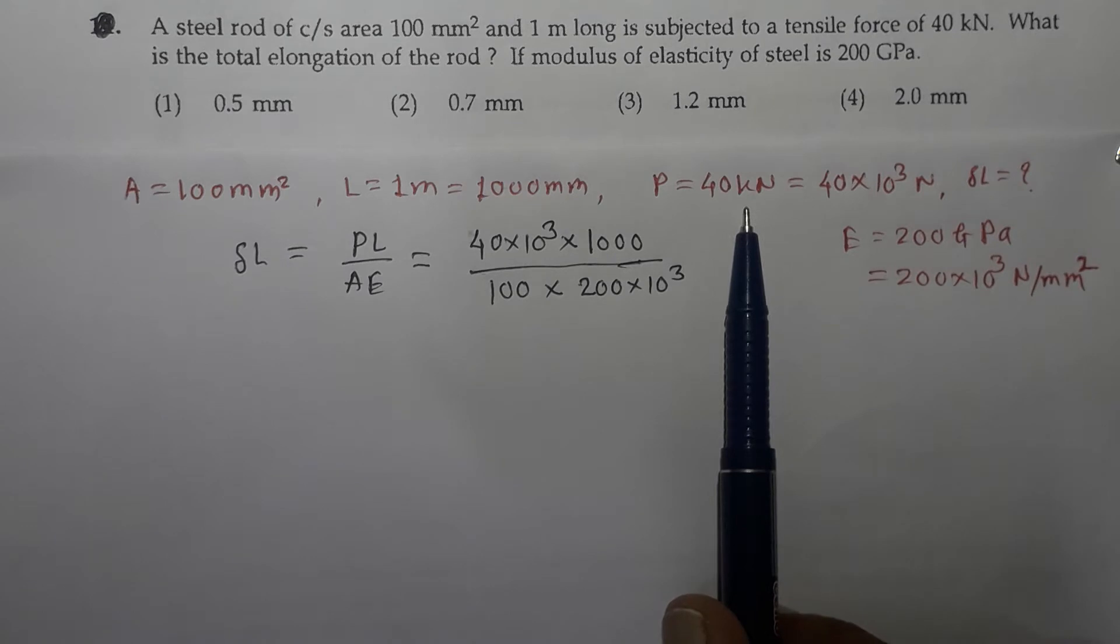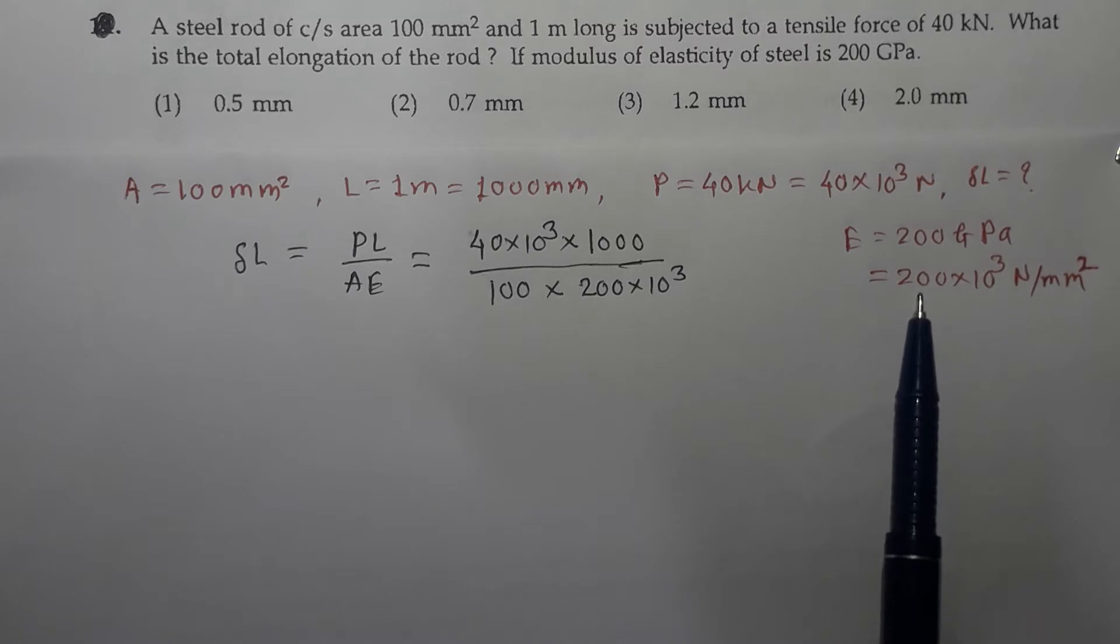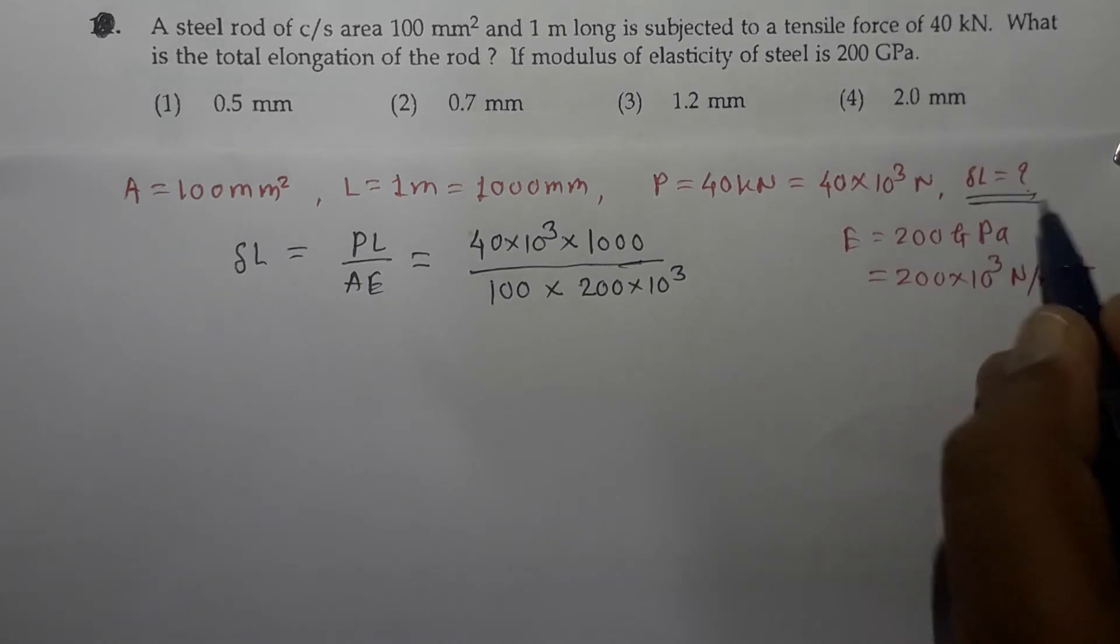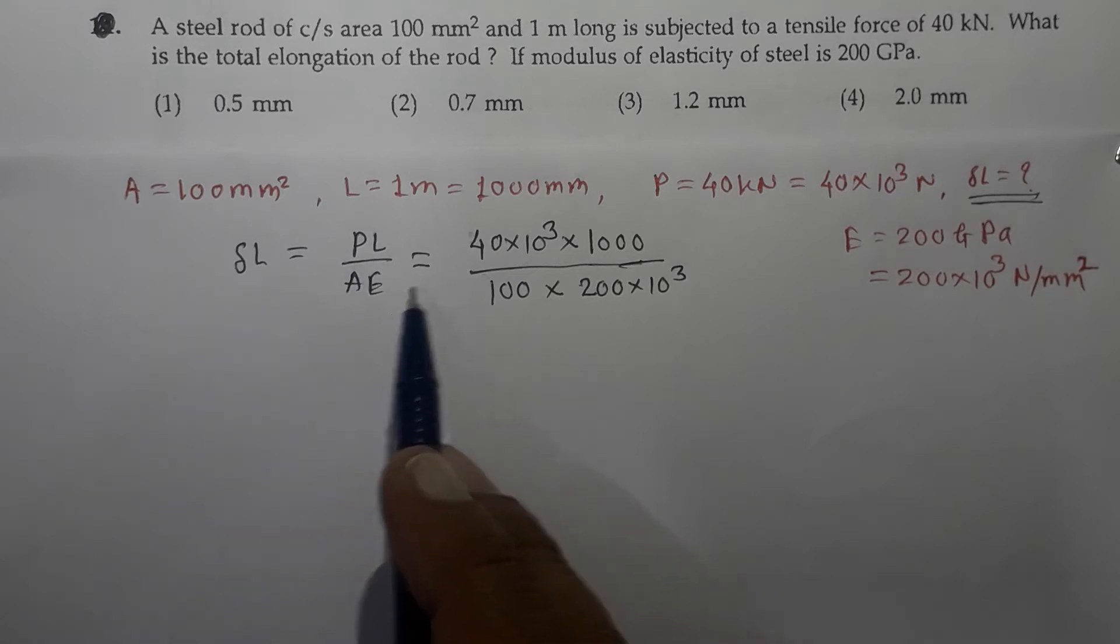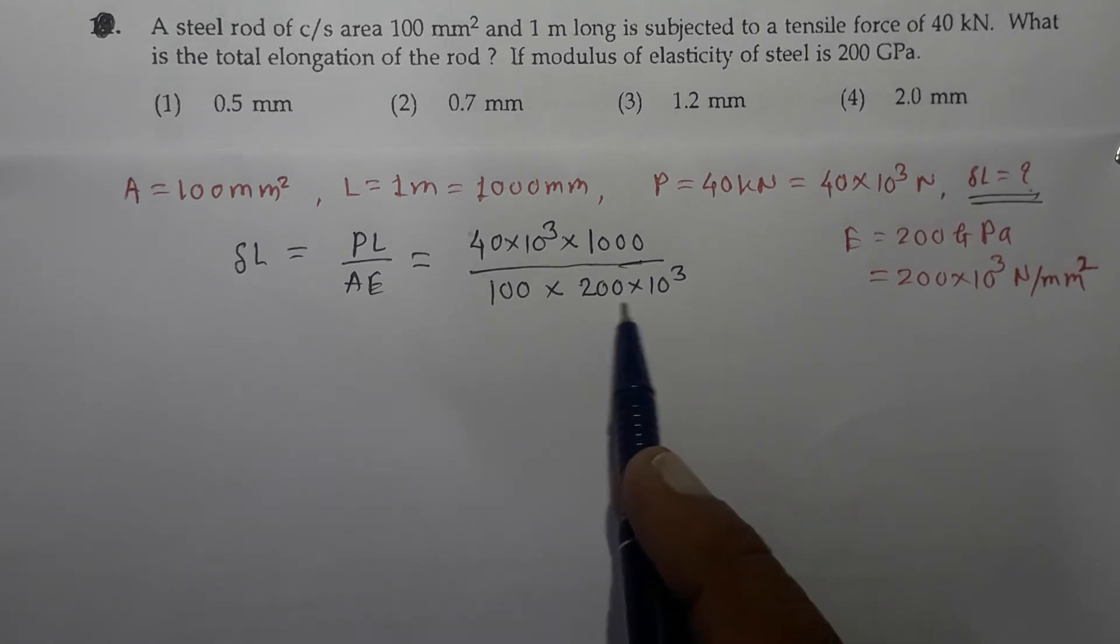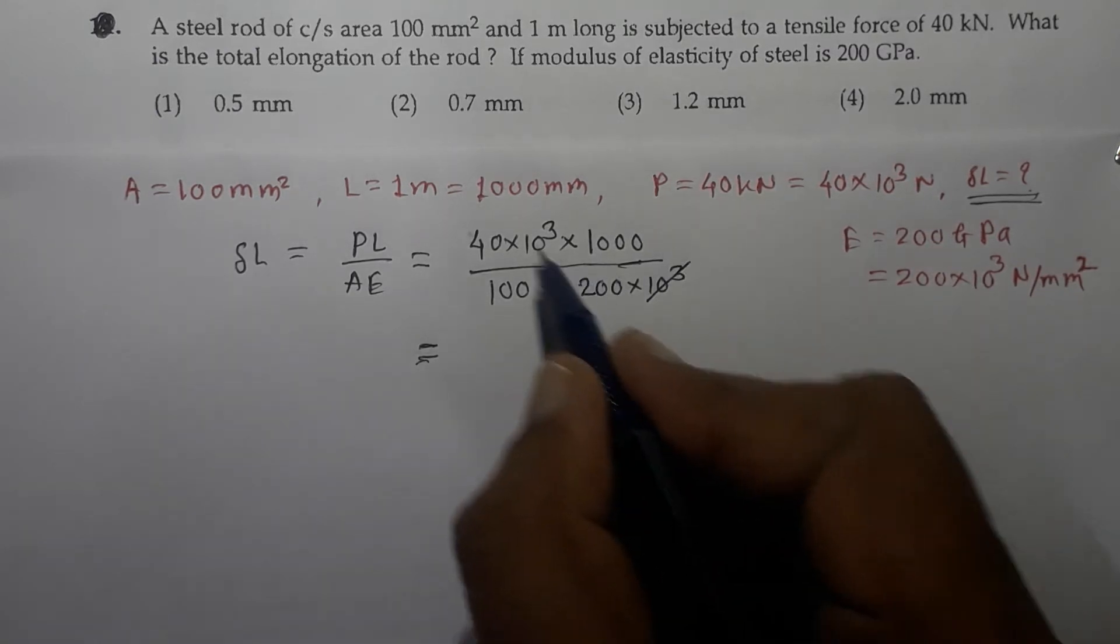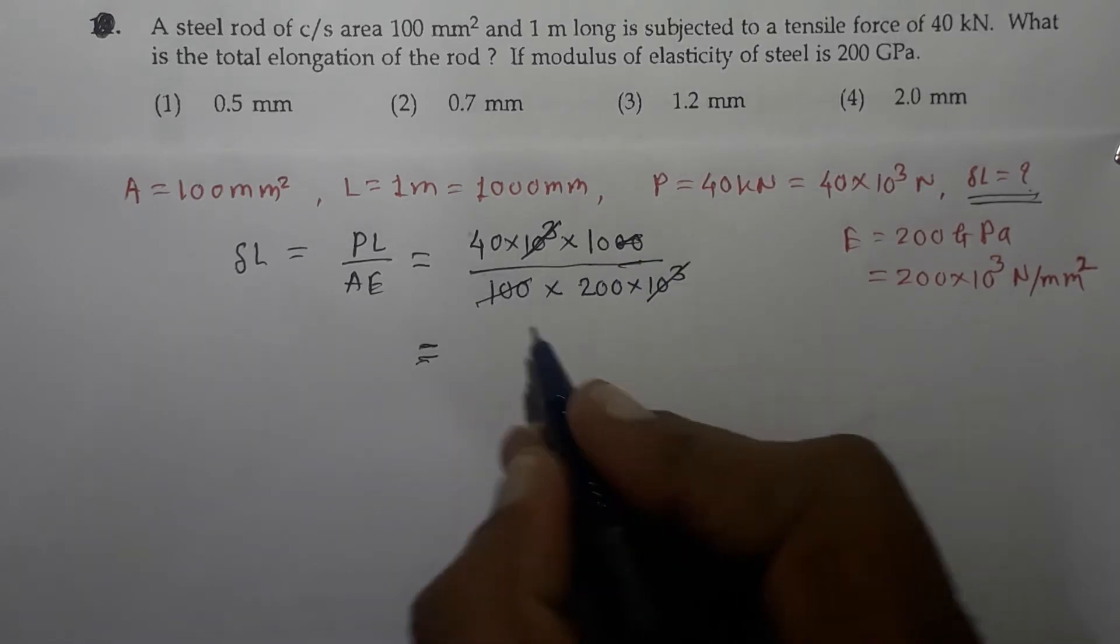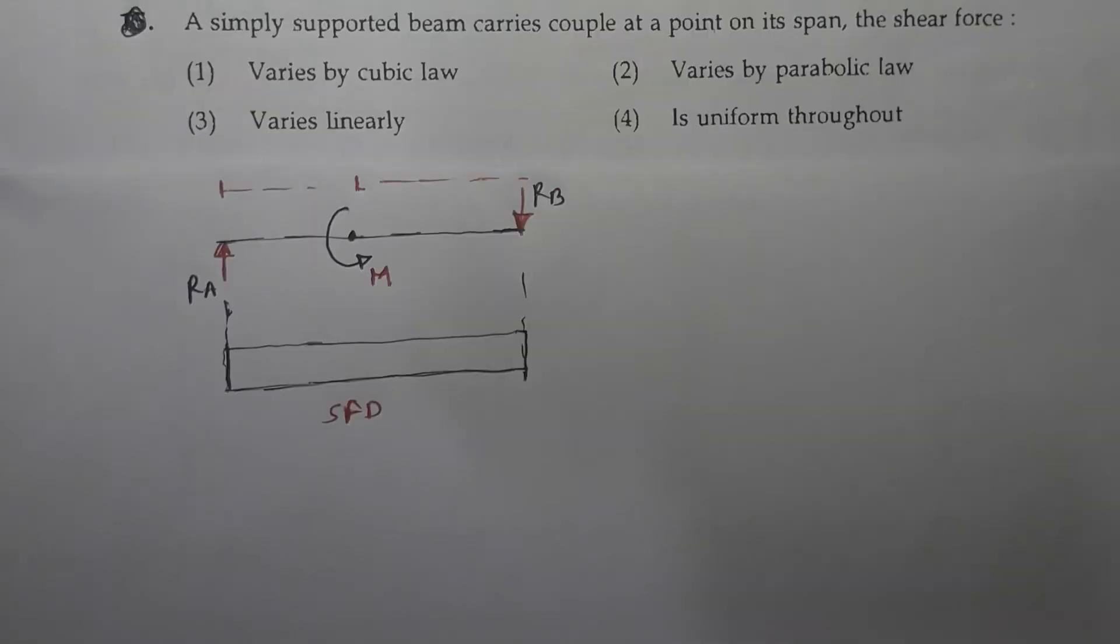P equals 40 kilo Newton, which is 40 into 10 raised to 3 Newton. E is given as 200 GPa, which can be converted as 200 into 10 raised to 3 Newton per mm square. And it is asked to get the change in length. Now we know the basic formula for change in length delta L equals PL upon AE. P is 40 into 10 raised to 3 Newton, into L is 1000, A is 100 and E is 200 into 10 raised to 3. So 10 raised to 3 gets cancelled, 100 is getting cancelled. So it is 40 into 10, 400 divided by 200, which is 2 mm and that is why option 4 is the correct option.